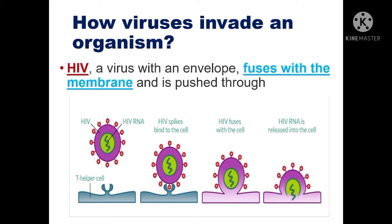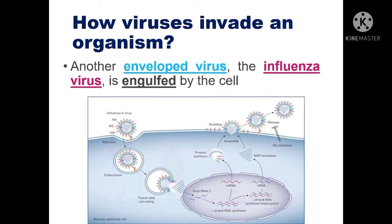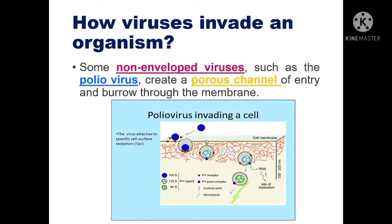HIV, a virus with an envelope, can be transmitted through sexual intercourse with an infected person. Once inside the body, it fuses with the membrane and is pushed through. Viruses then release their genomes and disrupt or hijack various parts of the cellular machinery. Another enveloped virus, the influenza virus, is engulfed by the cell. Some non-enveloped viruses, such as the poliovirus, create a porous channel of entry and burrow through the membrane.